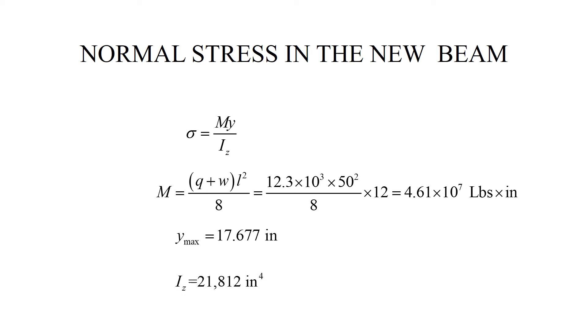Now, we're going to do the stress analysis. The basic formula. M, as before, is equal to Q plus W, L squared over 8. L stays 50 feet. Q plus W is now larger. And, as a result, we obtain this design moment. I put 12 here so that I immediately obtain a result that is in pounds times inch rather than pounds times feet. Y max has been calculated on the previous slide. I Z has been calculated on the previous slide. And, as a result, we obtain that maximum stress is 37.4 KSI.